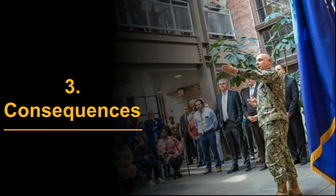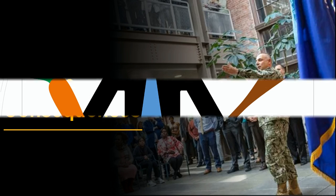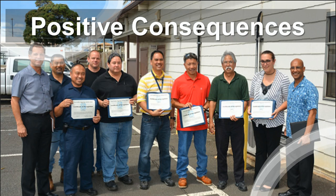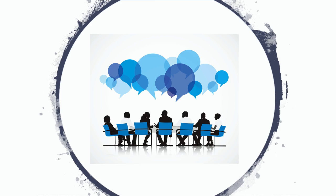The third C is consequences. Everyone generally understands the stick — ensure everyone understands the carrot, too. Lay out the positive consequences of meeting the expectation by linking them to the mission, success, impact, opportunities, and the greater good. Also, make a conscious decision whether the negative consequences require discussion at all.